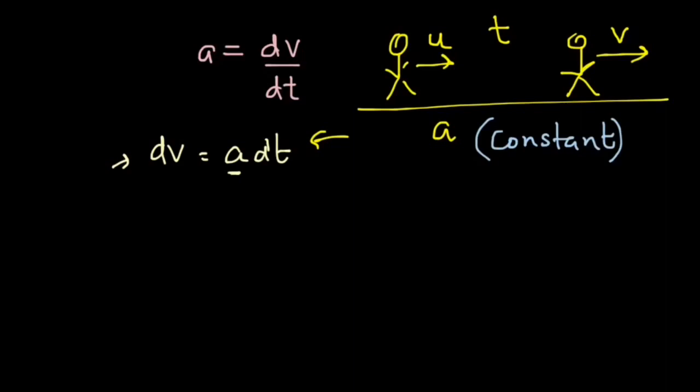We can apply integration sign on both sides to get integration of dv equals to integration of a into dt. Because we are starting from some given value u, we have to set the limits of integration. The velocity of the man is changing from u which is the lower limit or the initial value to v which is the final value. And the time taken in this process is t. So, we started when the time was 0 and finally we have time spent t.